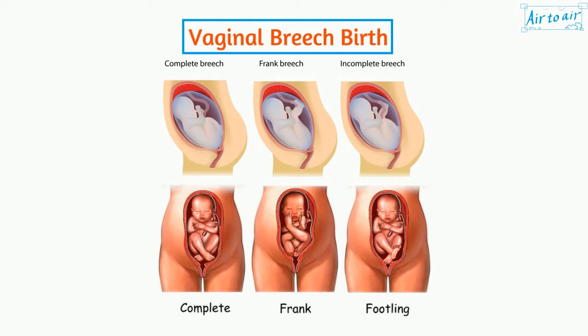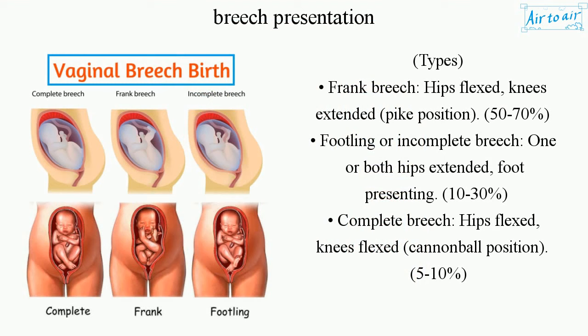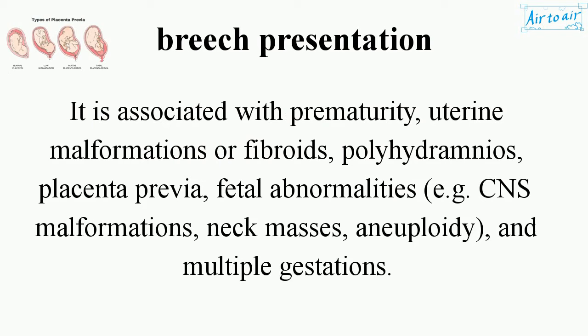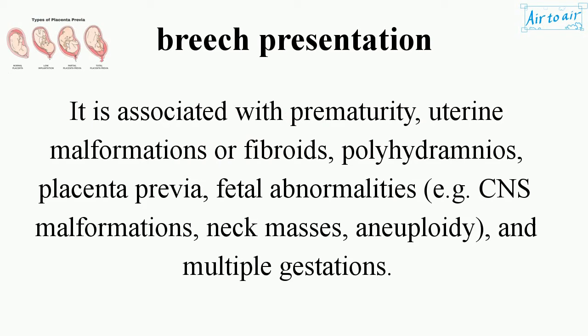Types of breech presentation: Frank breech — hips flexed, knees extended (pike position) — accounts for 50-70%. Footling or incomplete breech — one or both hips extended with foot presenting — accounts for 10-30%. Complete breech — hips flexed, knees flexed (cannonball position) — accounts for 5-10%.